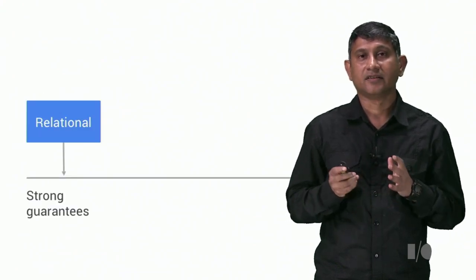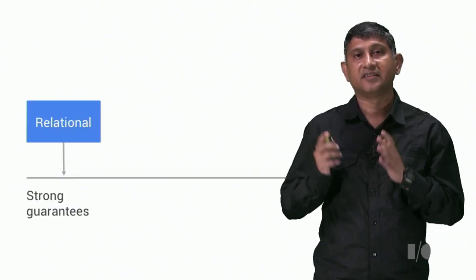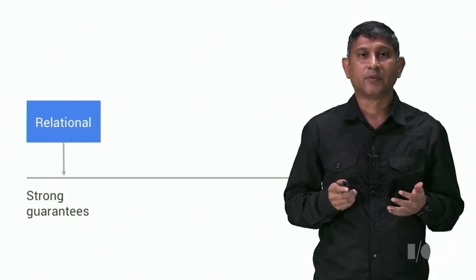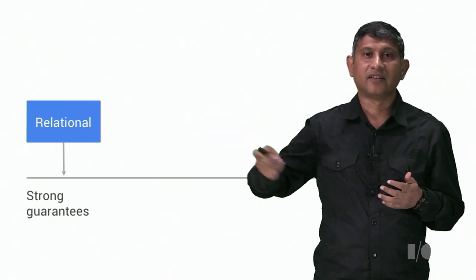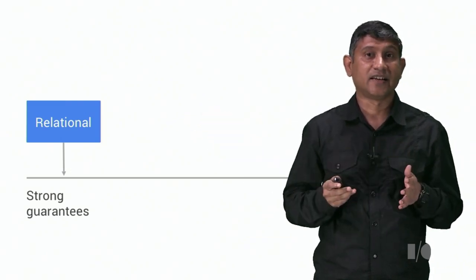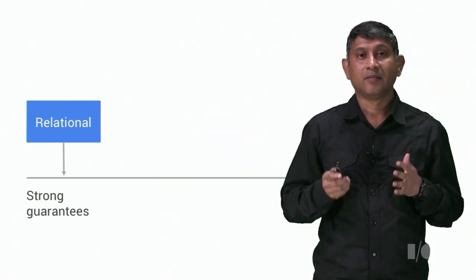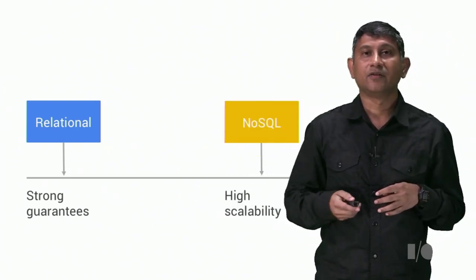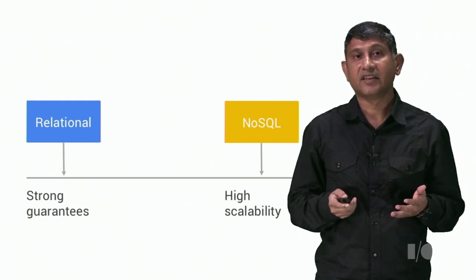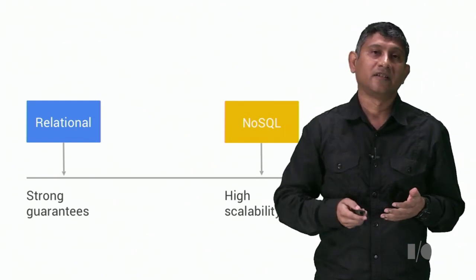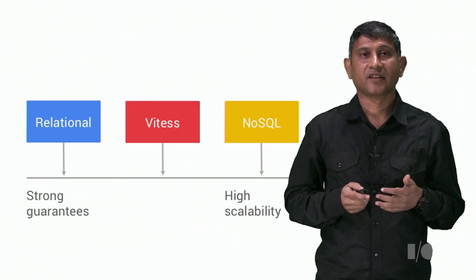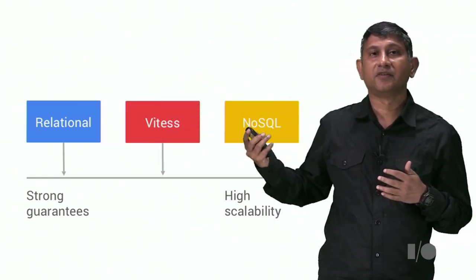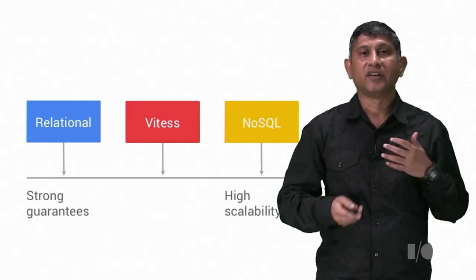So in short, Vitess is high performance, scalable storage system. Let's see how it's positioned compared to other products. See, on one side, we have the relational databases that give you rich functionality and data guarantees, but they don't scale out very well. And on the other end of the spectrum, we have the NoSQL solutions that give you good scalability, but they are not strong on data guarantees, et cetera.